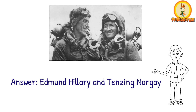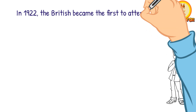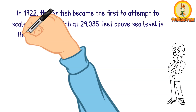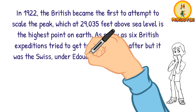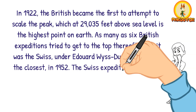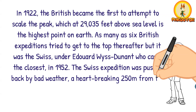In 1922, the British became the first to attempt to scale the peak, which at 29,035 feet above sea level is the highest point on Earth. As many as six British expeditions tried to get to the top thereafter, but it was the Swiss, under Edouard Wyss-Dunant, who came the closest in 1952. The Swiss expedition was pushed back by bad weather, a heartbreaking 250 meters from the summit.